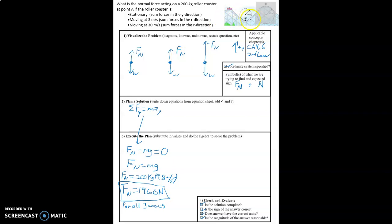If the roller coaster car is moving and going in a curved path, that means there is acceleration. So even if it's moving at a constant velocity and going in a curved path, it is accelerating.